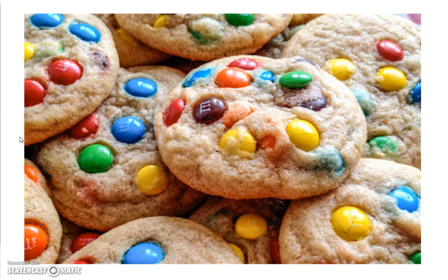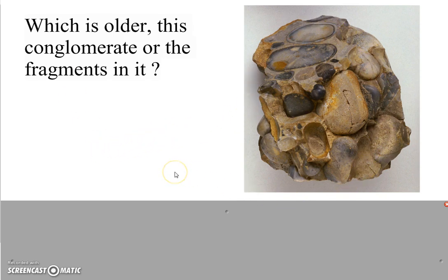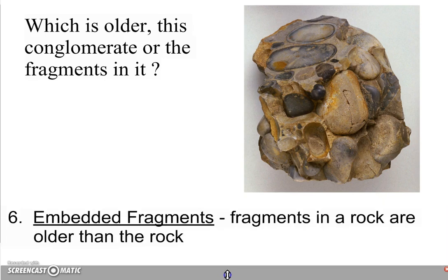Rule number six — looking at this picture, what existed first, the M&Ms or the cookies? You couldn't make the cookies before you had the M&Ms. Now applying that same idea to a conglomerate: what's older, the conglomerate itself or the pieces in it? We could not get this conglomerate unless those pieces already existed. So the sixth rule says that fragments in a rock have to be older than the rock. Whatever that rock is made of — fragments, sediments, shells, or minerals — has to be there before the rock itself can form.